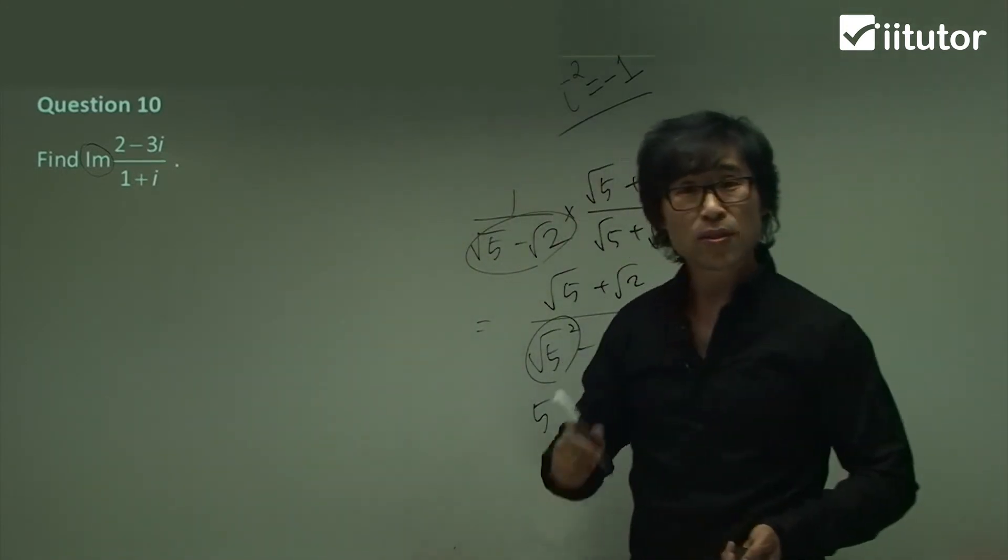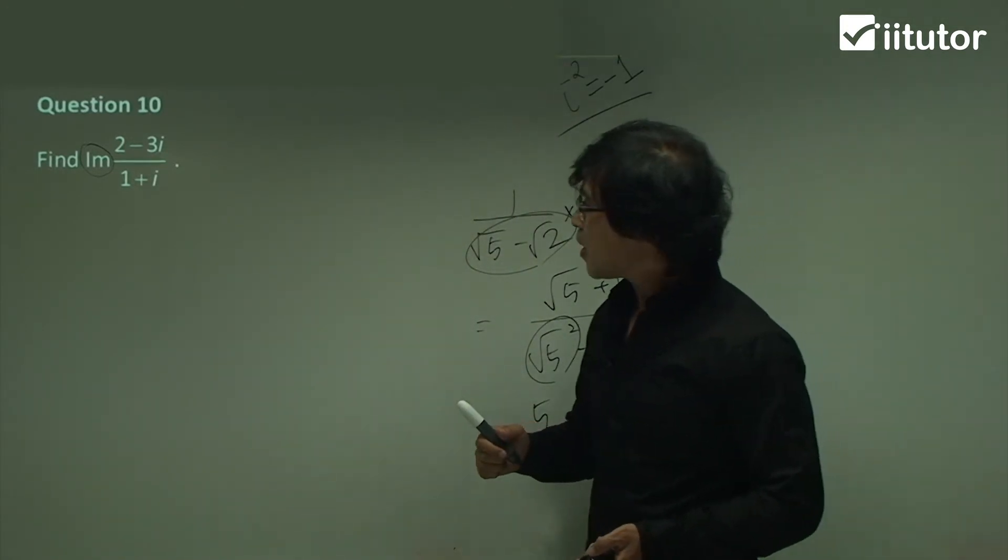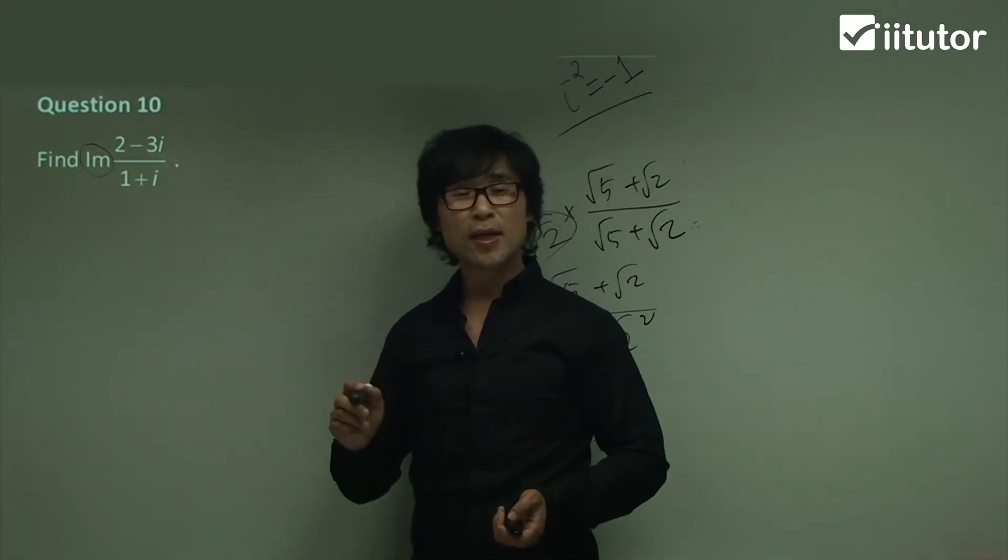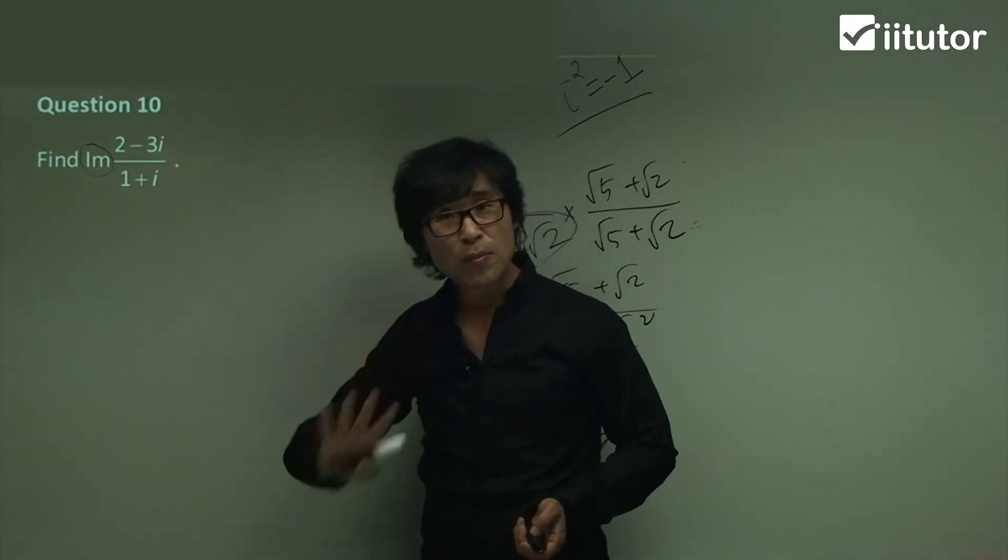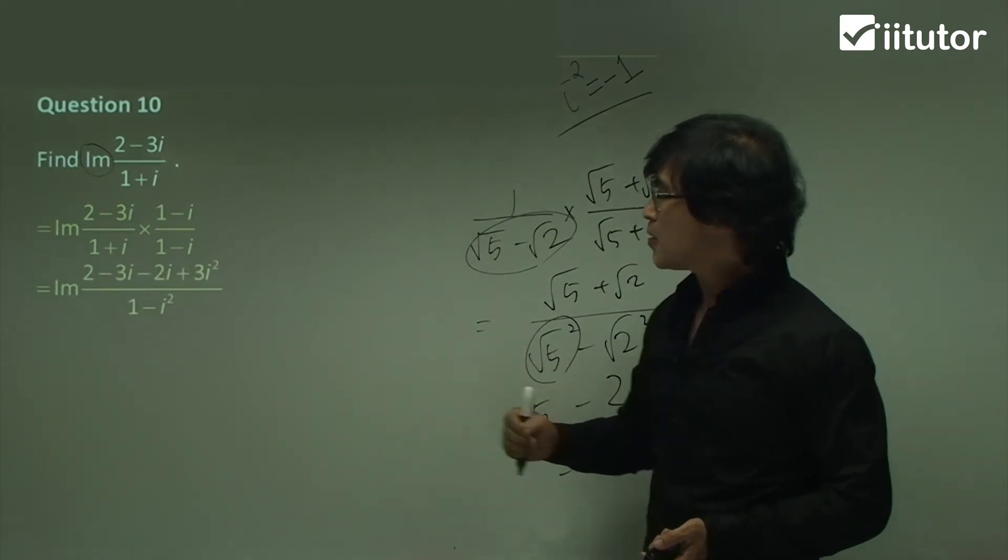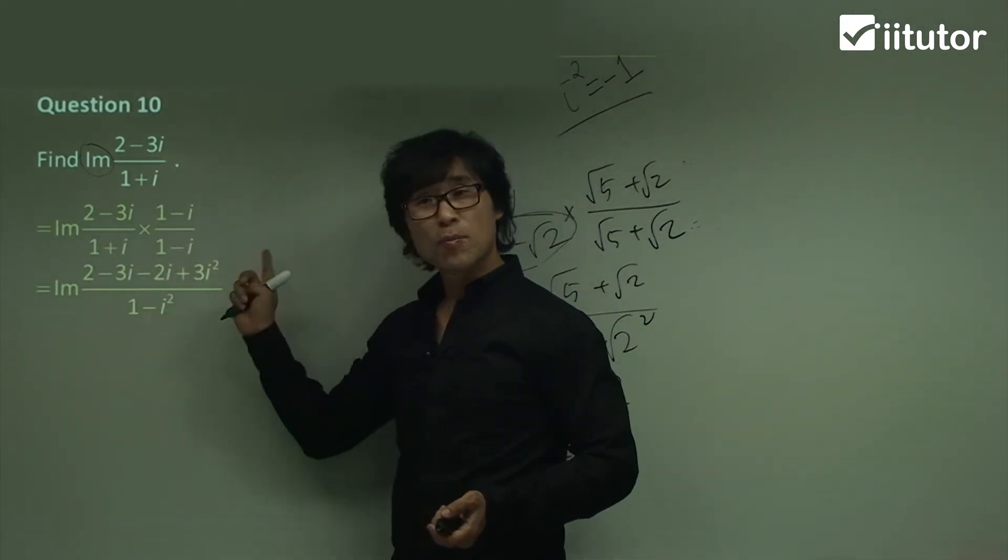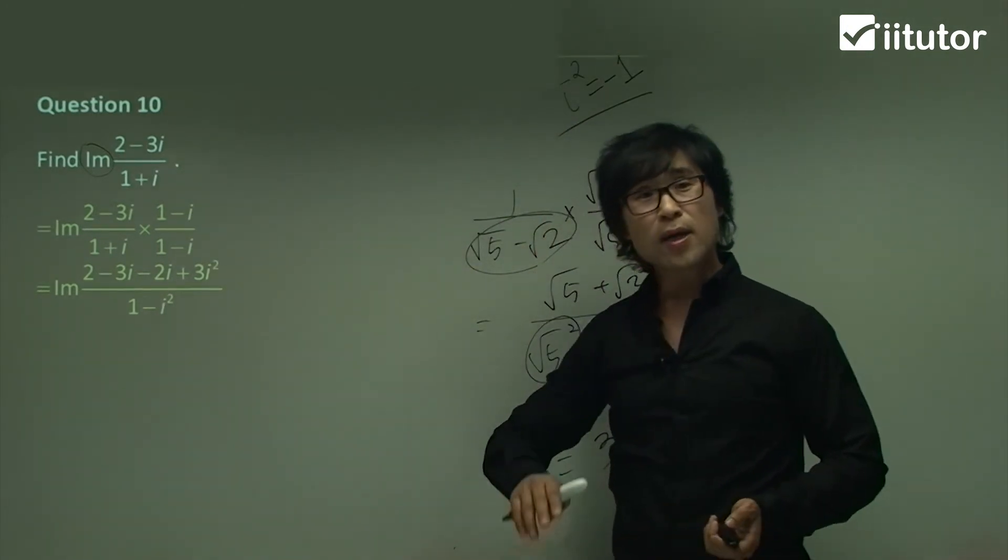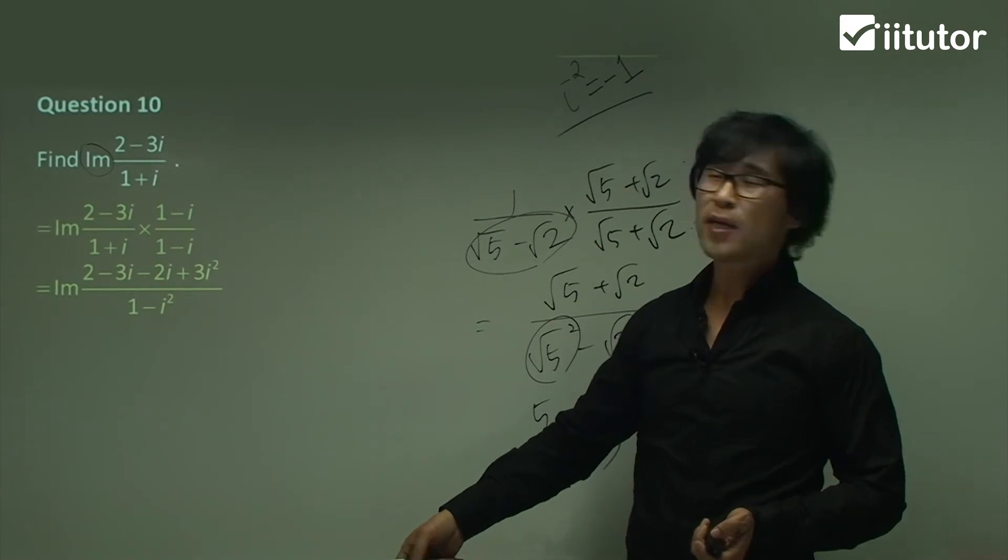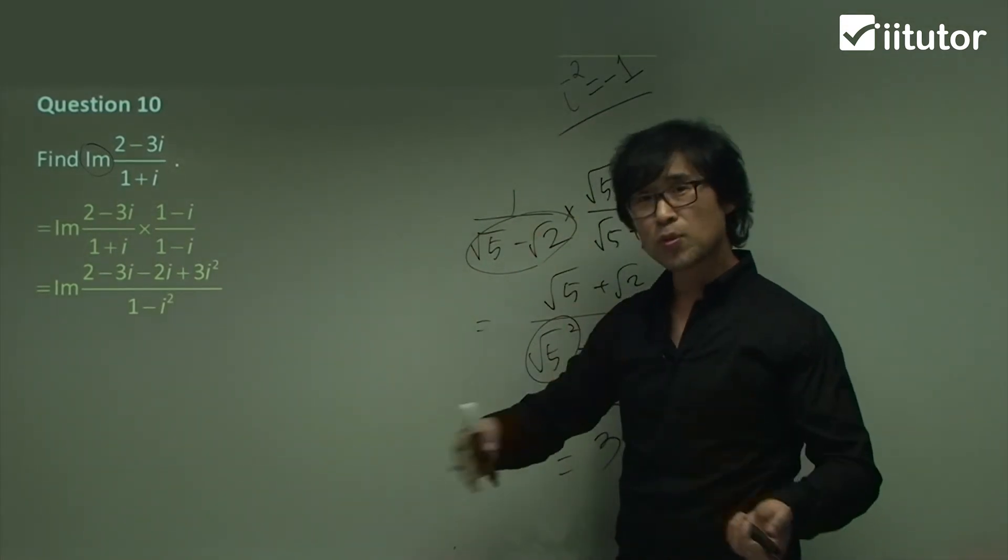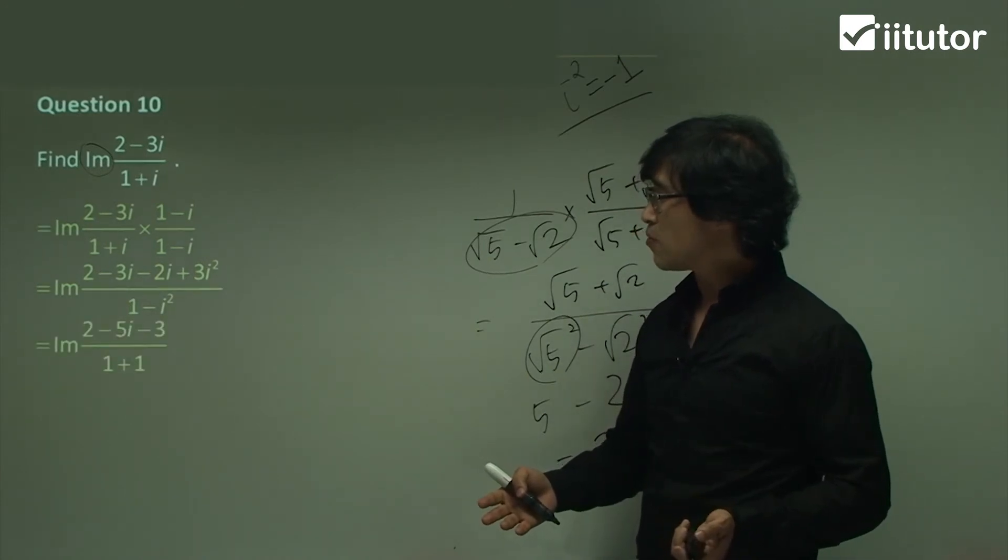Multiply the conjugate. So what was the conjugate? 1 minus i. We're going to multiply 1 minus i and 1 minus i, up and down. And expand as you did. So 1 plus i, 1 minus i becomes 1 minus i squared. And the numerator is a simple expansion. And use i squared equals negative 1. Keep on substituting. You will get this value. So can you see? That equals to negative 3. That's why it becomes negative 3. That becomes positive 1.